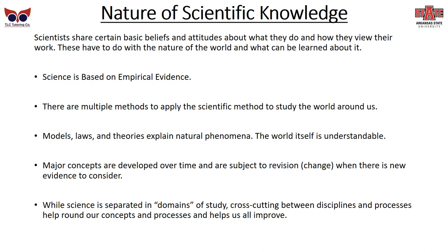Science is based on empirical evidence. Empiricism and empirical evidence means physical, observable truth — evidence that we can base decisions on. That's how we make scientific decisions: we don't just have guesses, we have evidence that supports the things that we believe.